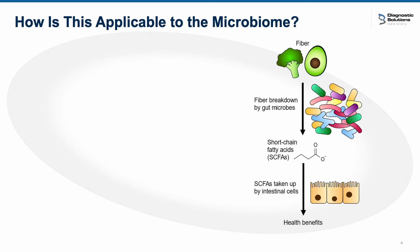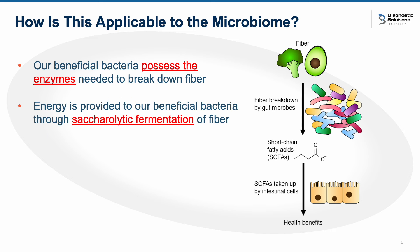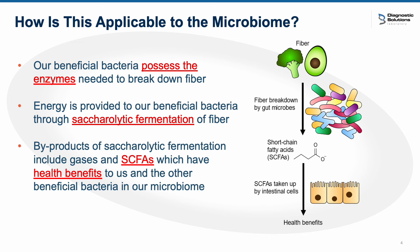A big question is how does fiber play into the health of our microbiome? We cannot endogenously produce enzymes that break down fiber, so we rely on our gut bacteria, which possess an array of enzymes to break down these complex carbohydrates. This anaerobic metabolic process is called sacrolytic fermentation. As microbes break down fiber into simple sugars, it produces energy for them, as well as byproducts including gases such as CO2, hydrogen, and methane, and short chain fatty acids — most commonly acetate, butyrate, and propionate — which have health benefits to us as hosts and to other beneficial bacteria through cross-feeding.